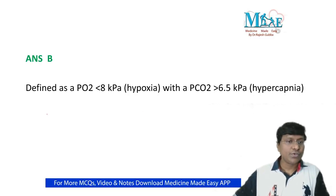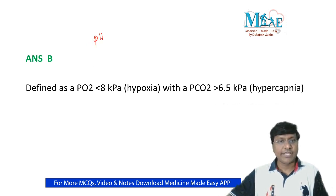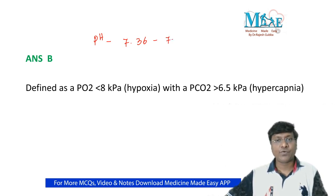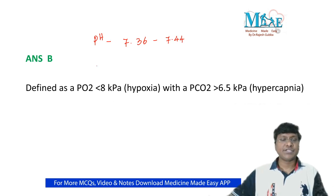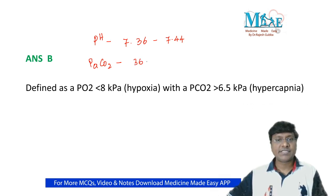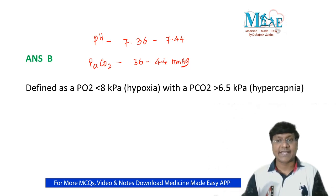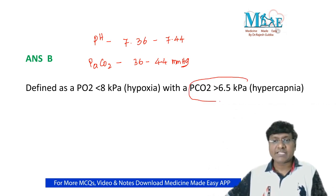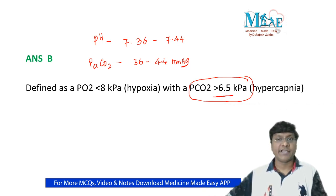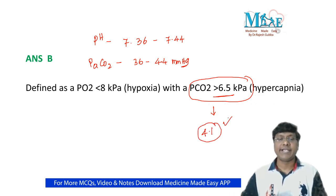First, the normal pH is 7.36 to 7.44. The normal partial pressure of carbon dioxide is 36 to 44 mmHg. In kilopascals, we call it hypercapnia if CO2 is more than 6.5 kilopascals. Our patient's CO2 is 4.1 kilopascals, which means carbon dioxide is within the normal limit.